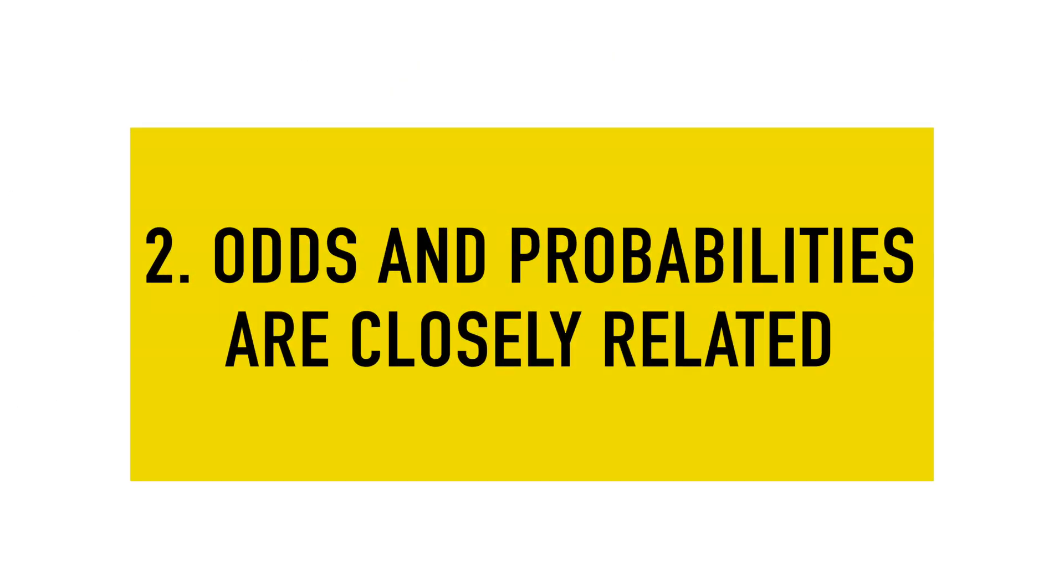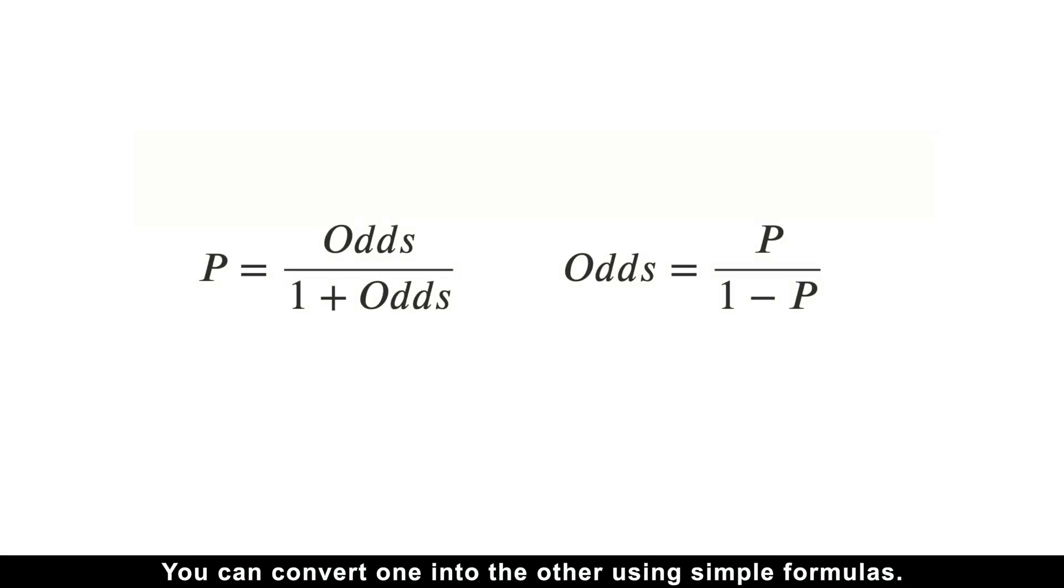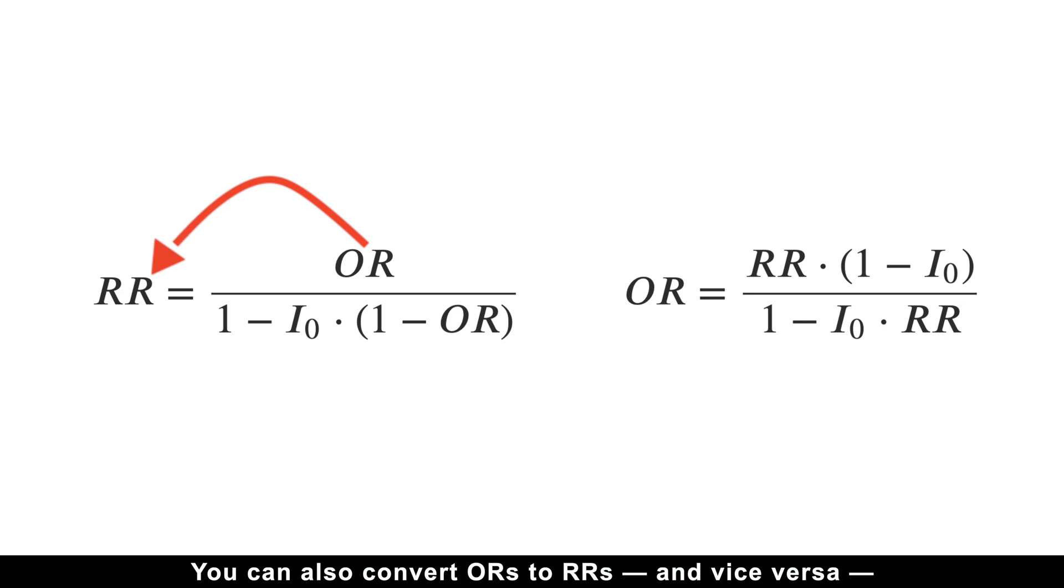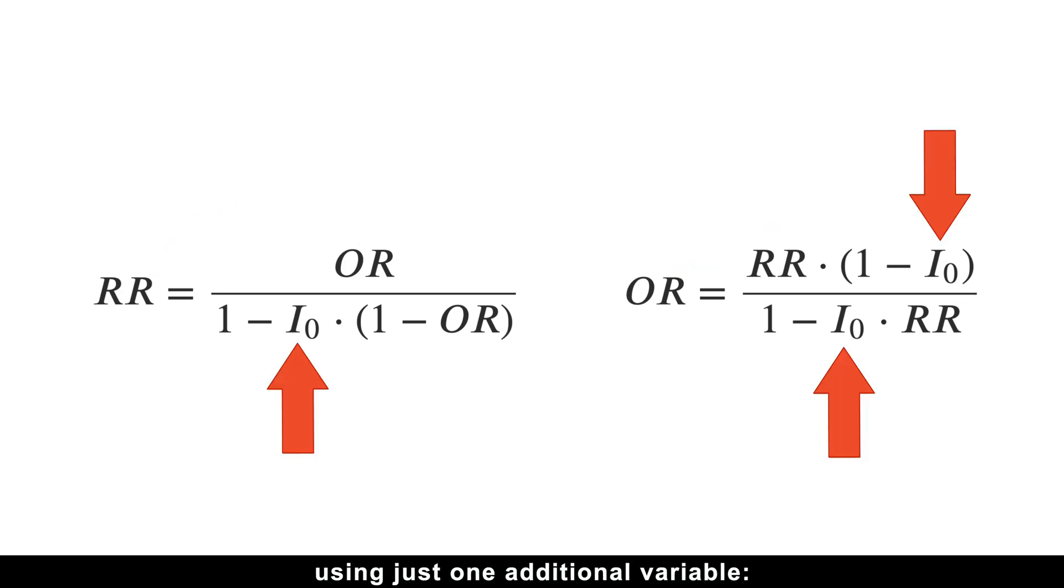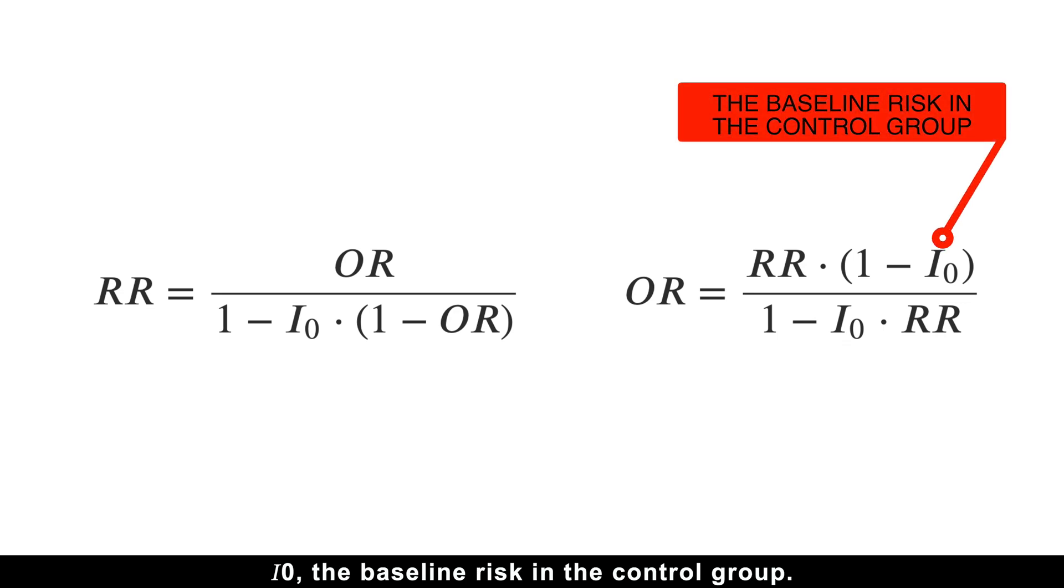Second, odds and probabilities are closely related. You can convert one into the other using simple formulas. You can also convert odds ratios to risk ratios and vice versa using just one additional variable, i0, the baseline risk in the control group.